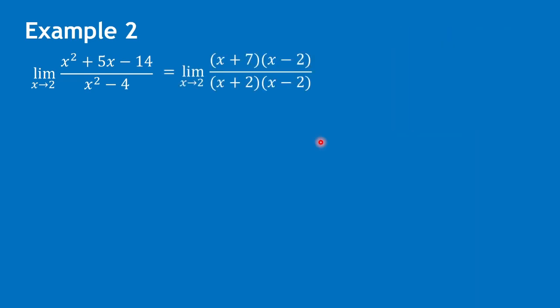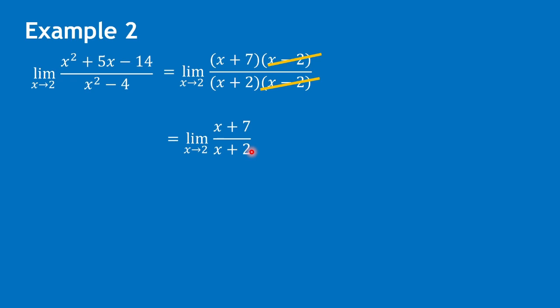Getting the factors of the numerator gives x plus 7 and x minus 2. Also, the denominator factors as the difference of two squares, giving x plus 2 times x minus 2. We can cancel x minus 2, giving us the limit of x plus 7 over x plus 2 as x approaches 2.